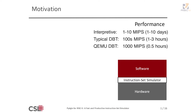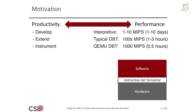One of the best-in-class DBT simulators is QEMU. It can get up to 1,000 MIPS, maybe even more. On the other hand, the other aspect of instruction set simulators is productivity — namely productively developing support for new ISAs, productively extending existing ISAs for instruction set specialization, and productively adding custom instrumentation to quantify the benefits of these specializations.